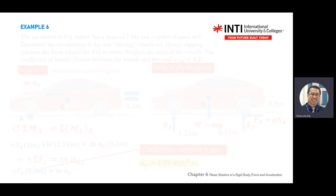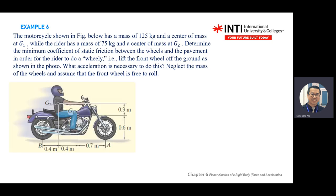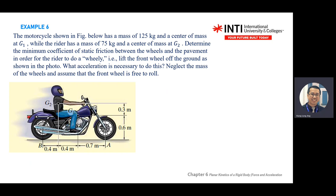The steps are almost the same. Example 6 is on a motorbike. How do you know this is a Chapter 6 question? You look at the picture — you always see the G. In your coming test, I think it also has G.